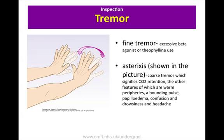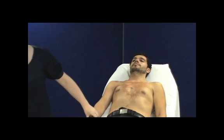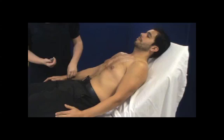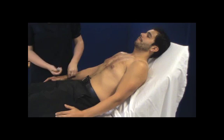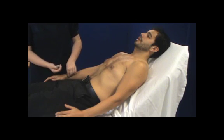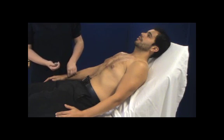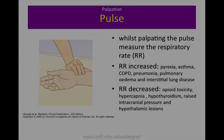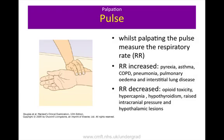Next, check the radial pulse. Palpate the radial pulse for 15 seconds if it is regular, or for 30 seconds if it is irregular, and note the rate. Once you have estimated the rate of the pulse, it is necessary to measure the patient's respiratory rate. This should be done whilst taking the patient's pulse so the patient is unaware that the respiratory rate is being measured, as this may make them anxious.